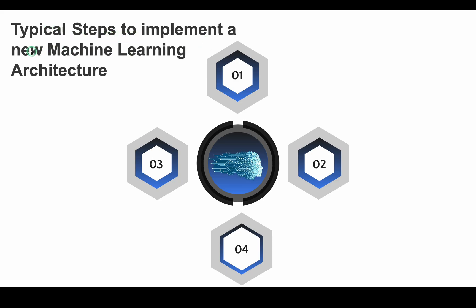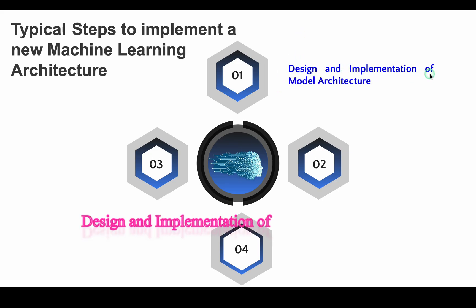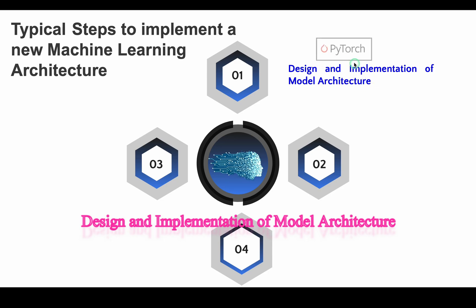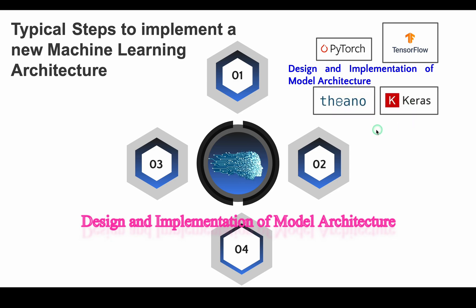If we have to implement a novel machine learning architecture, the following standard steps need to be followed. The first step is designing and implementation of the entire model architecture. You can design it by taking any deep learning framework like PyTorch, TensorFlow, Theano, Keras, or even scikit-learn.